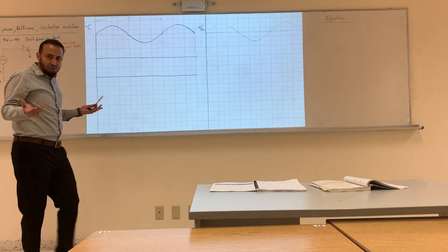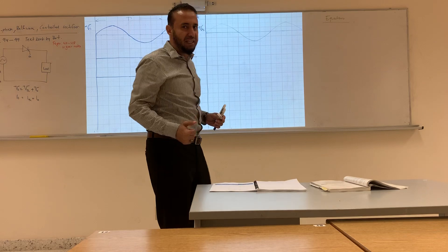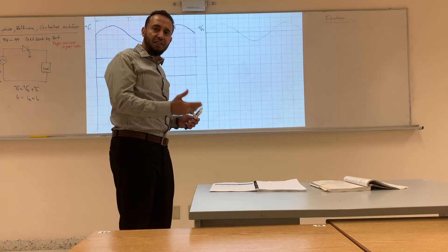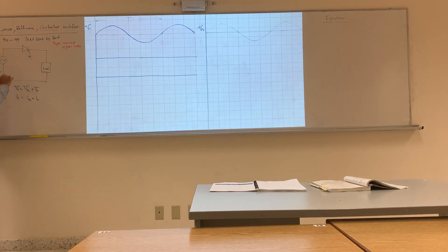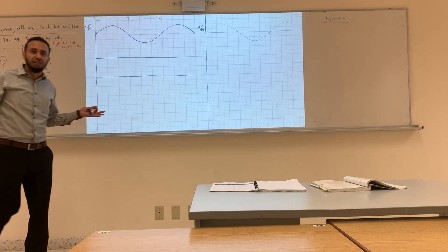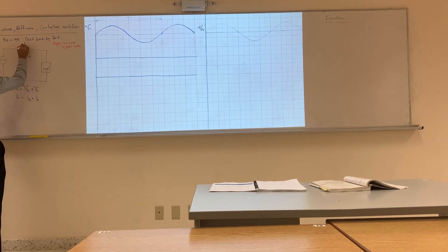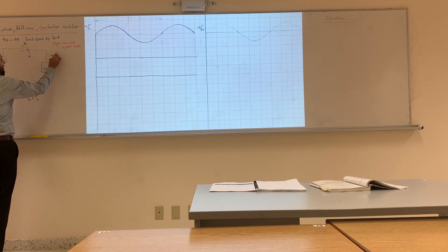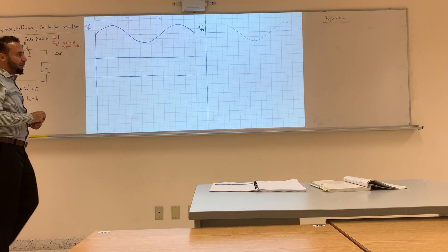Before, alpha used to be zero. But now we can play with alpha, which is the firing angle. We can make it 30 degrees, 45, 60, 90 degrees — we will see that. And before we used a power diode; now we use a thyristor with a gate that we can control. That's the only difference. We call it a thyristor, or we call it SCR, which is Silicon Controlled Rectifier — one of the families of thyristors.